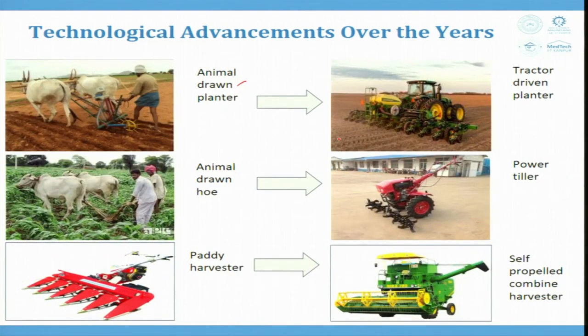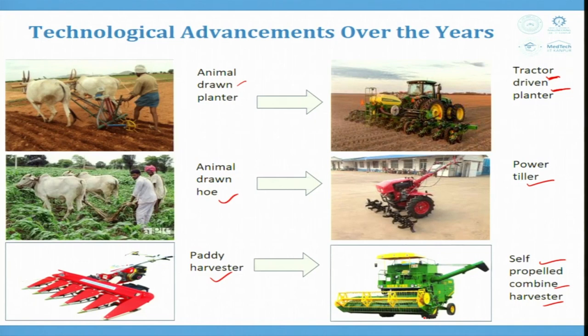Animal-drawn planters were replaced by tractor-driven planters, which were about 10 times more efficient. Hoes were replaced by power tillers, and paddy harvesters were replaced by self-propelled combined harvesters. Combines were not purchased by all farmers; instead, third-party service providers who own combines travel to different parts of the country to do harvesting, making the process much faster.